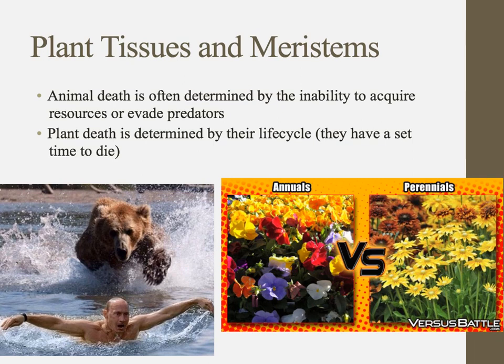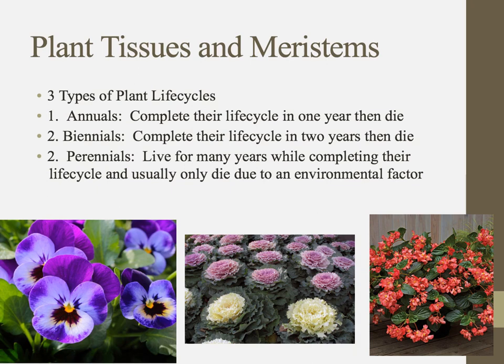Death is also very different in plants and animals. Animals often die determined by their inability to acquire resources or evade predators — we're talking about animals in the wild, of course. Animals can also be invaded by a pathogen and die. But none of these are predetermined — it's really something in the environment that determines when animals die. Plants, on the other hand, have their death determined by their life cycle, so they have a set time to die.